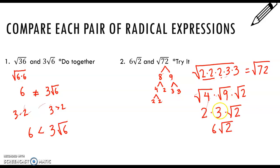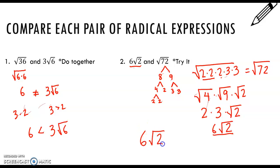The square root of 4 is 2, the square root of 9 is 3, and the square root of 2 is still the square root of 2. So it turns out that 6 root 2 and the square root of 72 are the same thing — 6 root 2 equals the square root of 72. I was able to write the square root of 72 as 6 root 2, so they're equal.